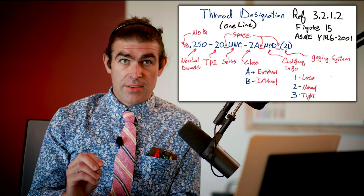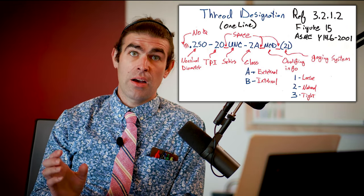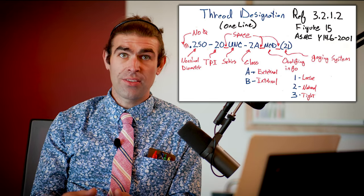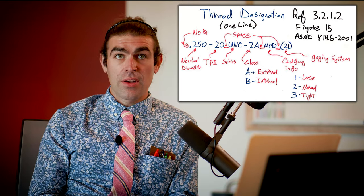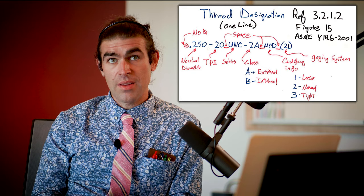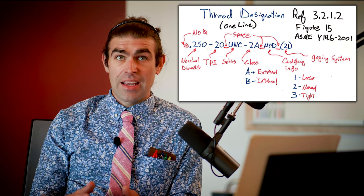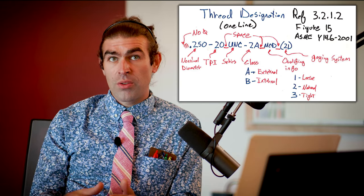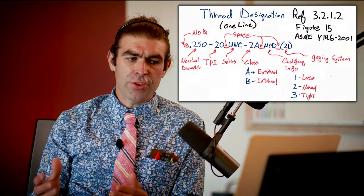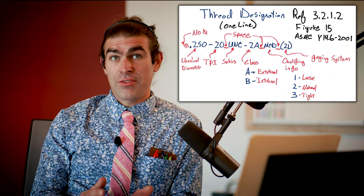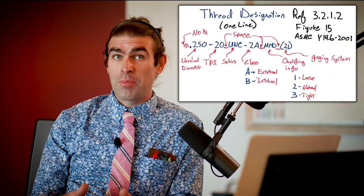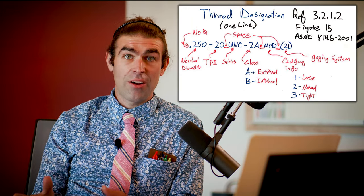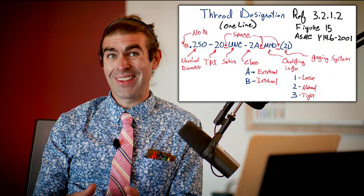For unified threads, we show the major diameter first with no diameter sign — it's omitted. We'll show it as a decimal. We use fractions for pipe threads. So you'll see: decimal, hyphen, threads per inch. In the example here it's a quarter inch hyphen 20 — a very common thread size. This quarter-20 is a coarse thread. The next part is the thread form: UNC stands for Unified Coarse. If you go to the unified handbook, you'll find all the dimensions and tolerances for this thread that you need to know and how to inspect it.